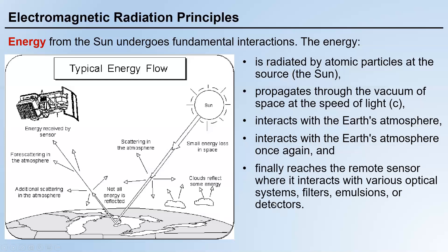Eventually, the reflected sun energy reaches the remote sensor, where it interacts with various optical systems, filters, and detectors. The reflected energy is received by the sensor and analyzed to retrieve information about the objects that reflected the energy. This is a very typical energy flow of passive remote sensing, where the sun is the energy source. The traveling process is very complex, especially when the energy arrives at Earth's atmosphere — but you don't have to memorize all those details now. We'll talk about them later in this course.